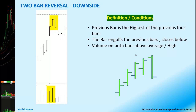Let us look at the definition of the 2-bar reversal. It is a combination of 2 bars, but we should look at the last 4 to 5 bars. The definition states that the previous bar is the highest of the previous 4 to 5 bars, and the current bar engulfs the previous bar and closes below, near the low. The volume on both bars — the current and the previous bar — are above average or high.